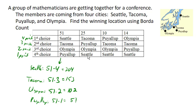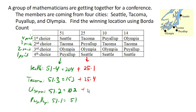For these 25 voters, we add in additional points. Seattle earns 1 point each, because this is last place — so 1 point from each of those 25 votes. Tacoma gets 4 points for each of those 25 votes. Olympia earns 2 points from each of those 25 votes. And Puyallup earns 3 points from each of those 25 votes.